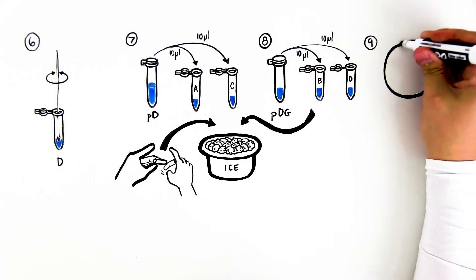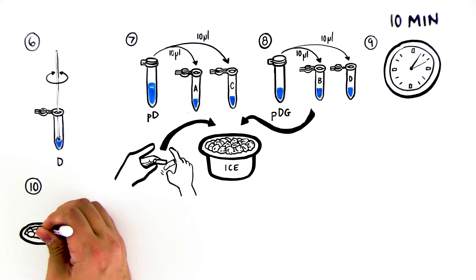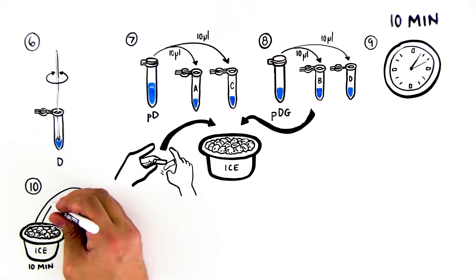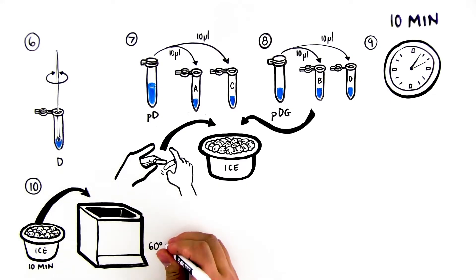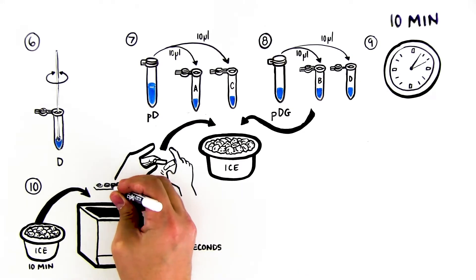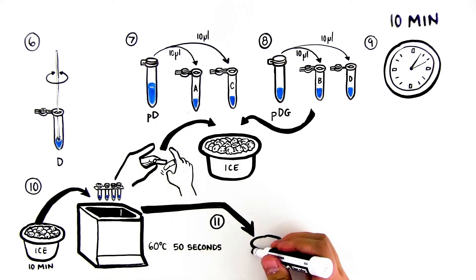Step 9: Incubate on ice for at least 10 minutes. Step 10: Bring tubes on ice to the water bath or dry bath. Heat shock at 60 degrees Celsius for exactly 50 seconds. Be sure the bottoms of the tubes contact the water. Step 11: Immediately return the tubes to ice for two minutes, then transfer to a tube rack.